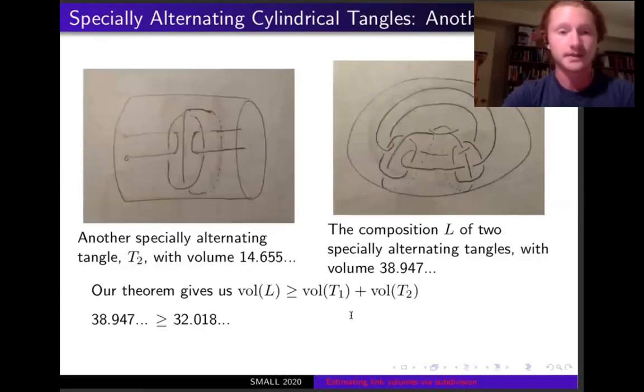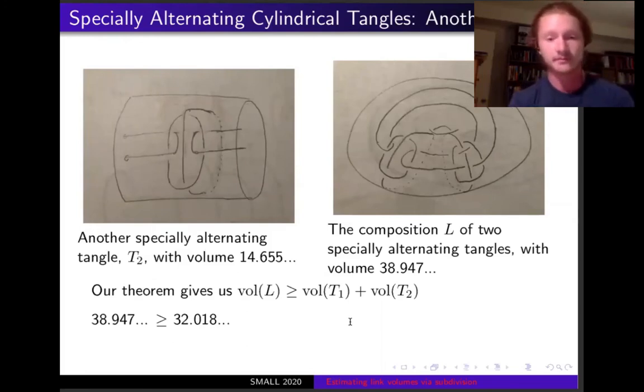Taking a look at a second example, on the left is another specially alternating tangle. This one with volume 14.655. And when we put these two together, on the right, you see what we call their composition. So, I've glued them together to create a thickened torus. And you'll note that this is not a fully alternating projection because this strand here goes under and then under again, which is kind of neat because we've proven that this thing is hyperbolic because its individual parts are hyperbolic. And not many classes of non-alternating links in the torus have been proven to be hyperbolic. And then if we examine the result that was talked about earlier, the volume of this link should be greater than the sum of the volume of the two constituent tangles. And indeed, we get the volume of the link as 38.947, which is greater than the sum, which is 32.018. So, a resounding success.